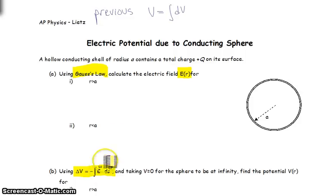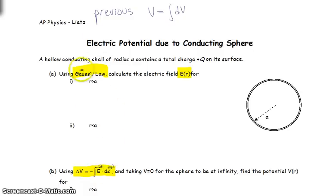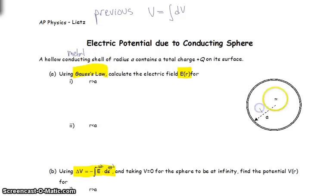Just in case you're confused, the computer is rendering the vector symbols over E and dS as little weird omegas, but that's what those are. So: a hollow conducting shell of radius A. Conducting means metal, and hollow means it's air or vacuum inside. Total charge positive Q on its surface.